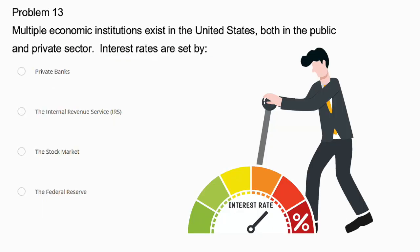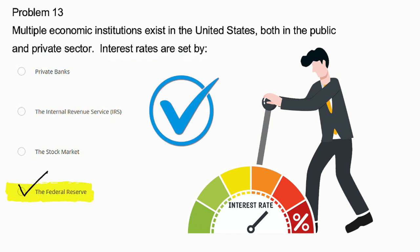Problem number 13. Multiple economic institutions exist in the United States, both in the public and private sector. Interest rates are set by private banks, the Internal Revenue Service, the stock market, or the Federal Reserve? Interest rates are set by the Federal Reserve because it is the central banking system within the United States and controls monetary policy. Private banks follow the rates set by the Federal Reserve. The IRS deals with taxes and the stock market involves buying and selling stocks, not setting interest rates. So Federal Reserve is the correct answer.